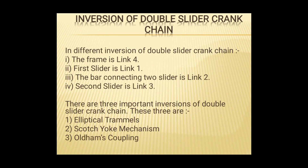Now we look at the inversions of double slider crank mechanism. If we have 4 links and we fix one link, we get one mechanism. If we fix different links, we get different mechanisms. This method of obtaining different mechanisms by fixing different links is called inversion. We can fix the frame (link 4), either of the two sliders, or the connecting link (link 2). Double slider crank mechanism has three inversions: the first is the Elliptical Trammel, the second is the Scotch Yoke mechanism, and the third is the Oldham Coupling.